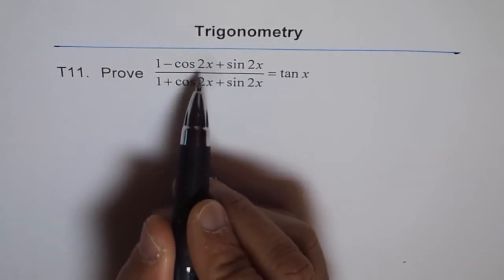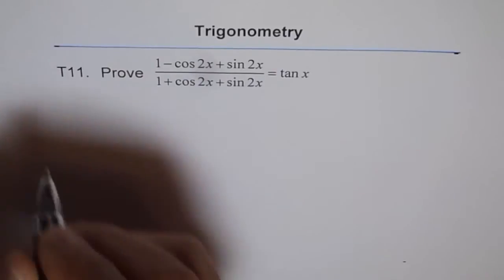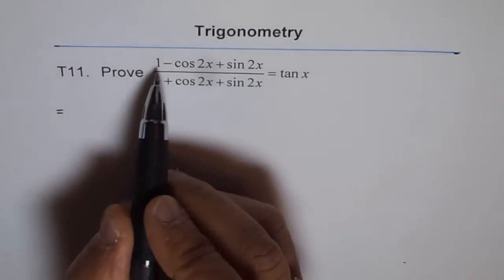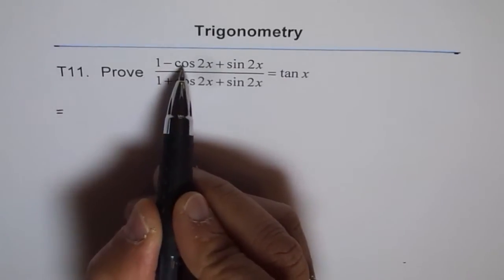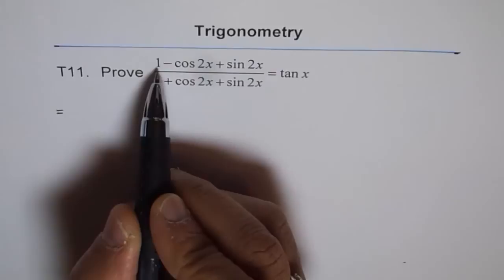Now which one to use? That is critical and that is why I have taken this example again. So we can write down the left side as equals to. Now here we have 1. So take the formula which will cancel out this 1. So that is what we will do.